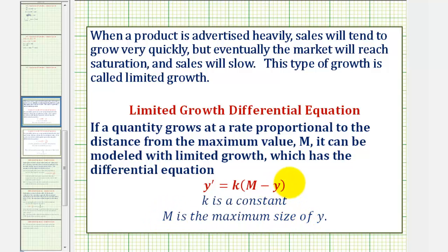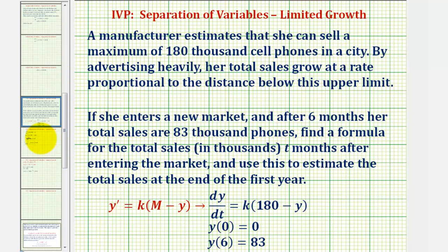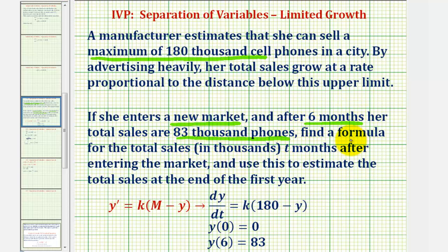Let's take a look at an example. A manufacturer estimates that she can sell a maximum of 180,000 cell phones in a city. By advertising heavily, her total sales grow at a rate proportional to the distance below this upper limit. She enters a new market and after six months, her total sales are 83,000 phones. Find a formula for the total sales in thousands of cell phones t months after entering the market and use this to estimate the total sales at the end of the first year.